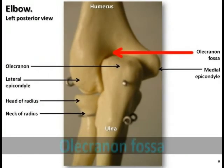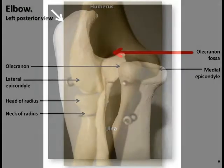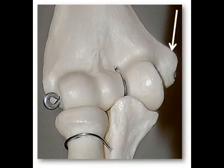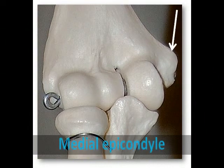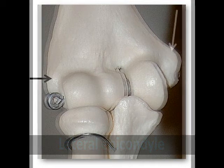The larger and deeper depression on the posterior side of the humerus is the olecranon fossa. Because of its size and depth, it makes for a great landmark to identify the posterior side of the bone. It articulates with the olecranon of the ulna during extension or straightening of the forearm. The medial and lateral epicondyles are rough projections on both sides of the distal end of the bone, and they serve as points of attachment for most of the forearm muscles.